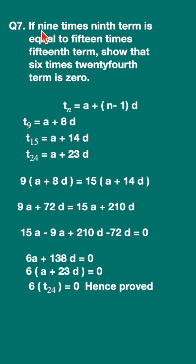Now let us find out the 9th term. t9, put n equal to 9. You get 9 minus 1, which is 8, so a plus 8d. That is the 9th term.